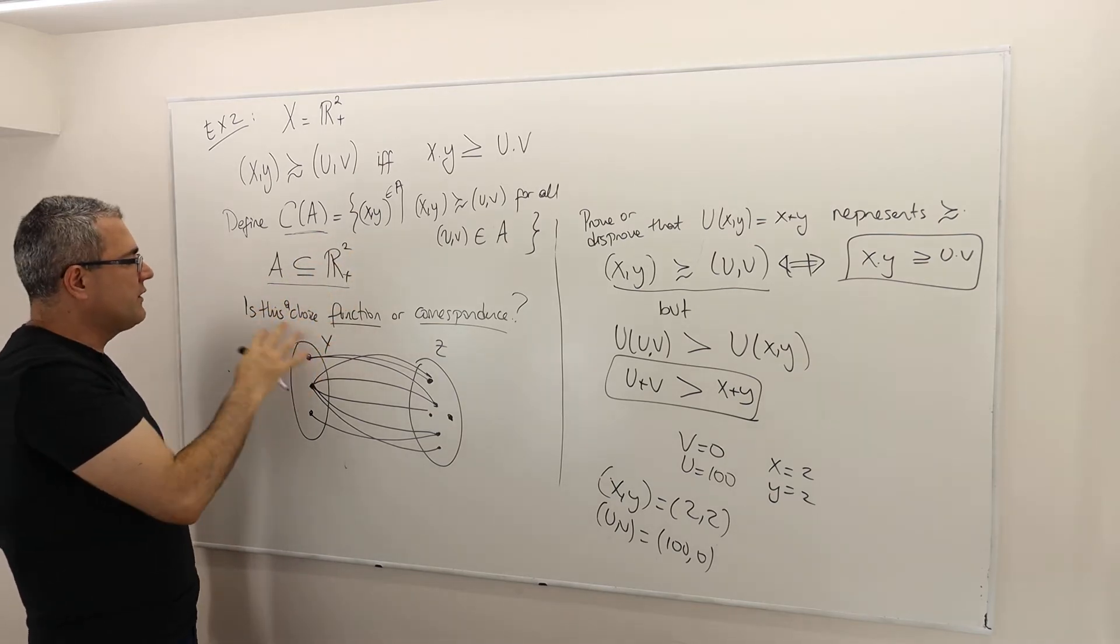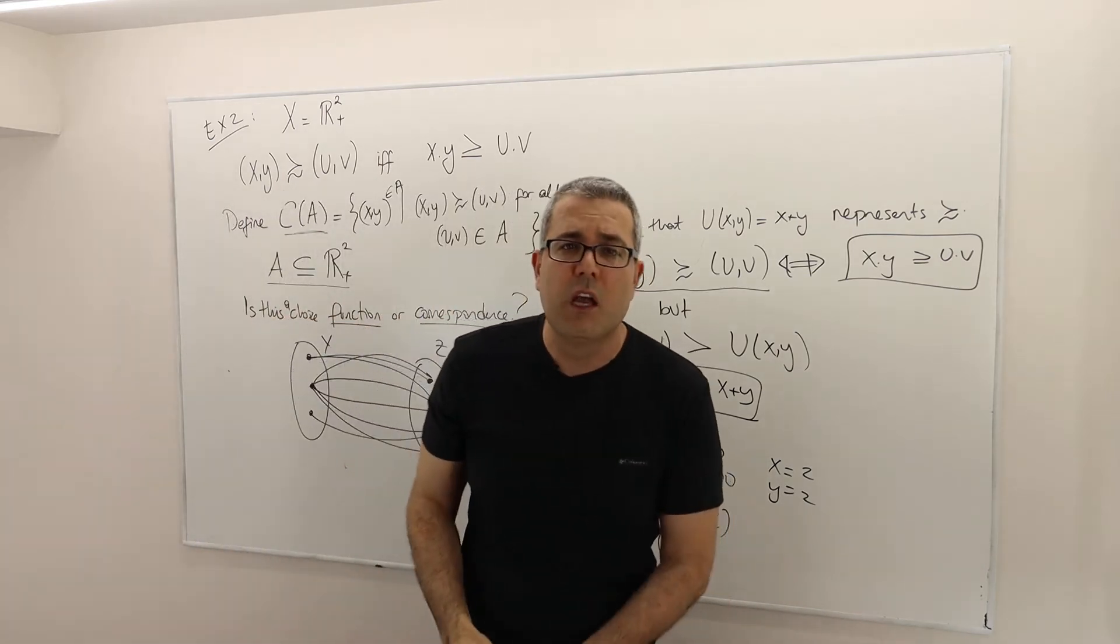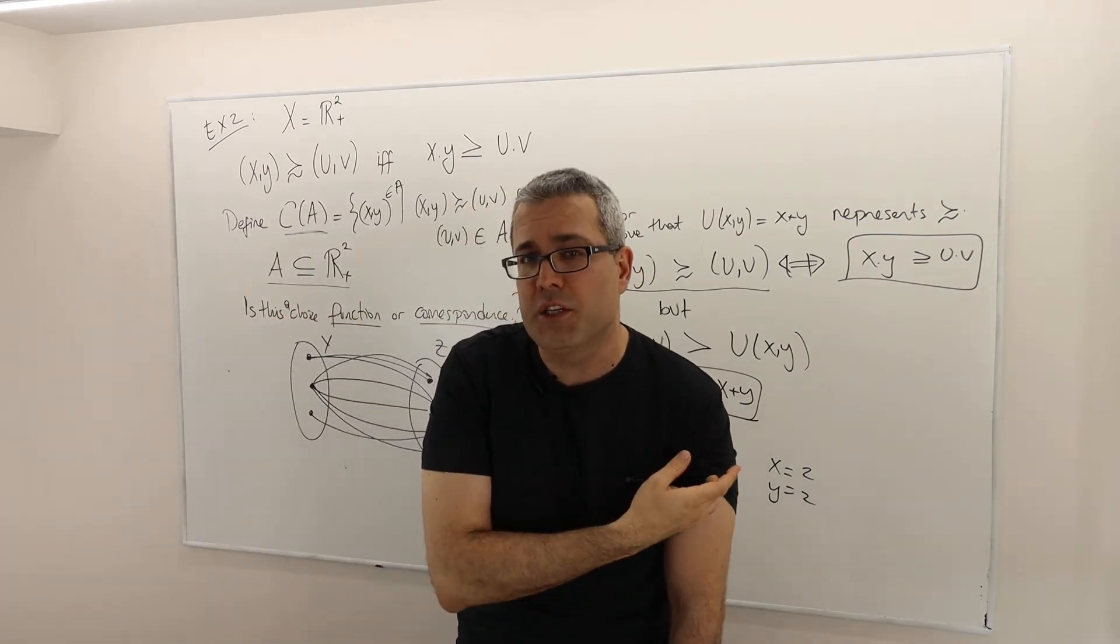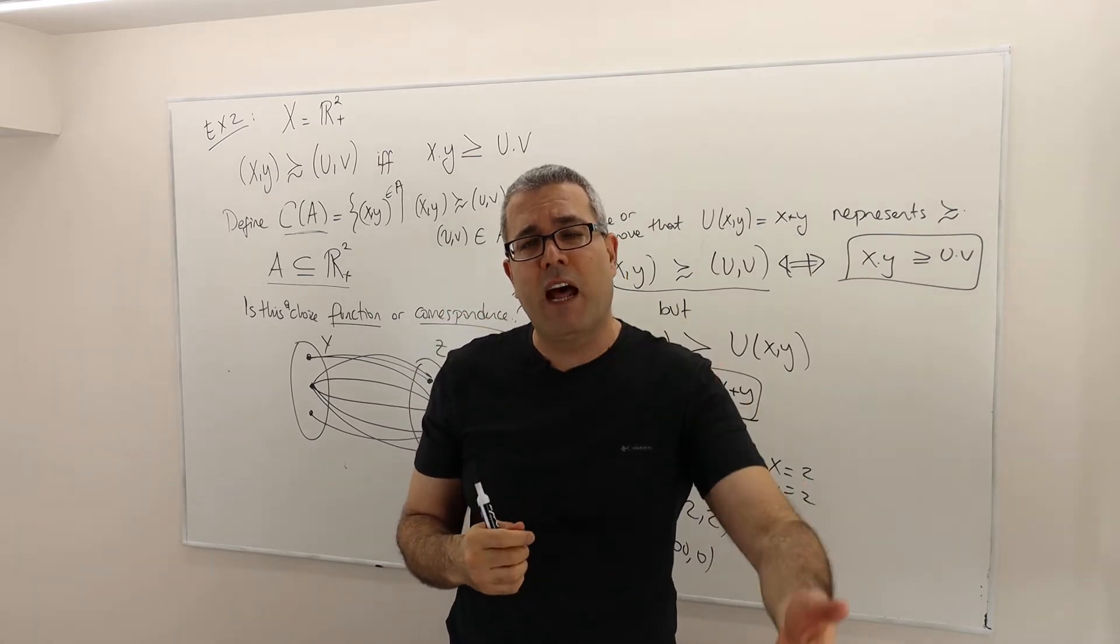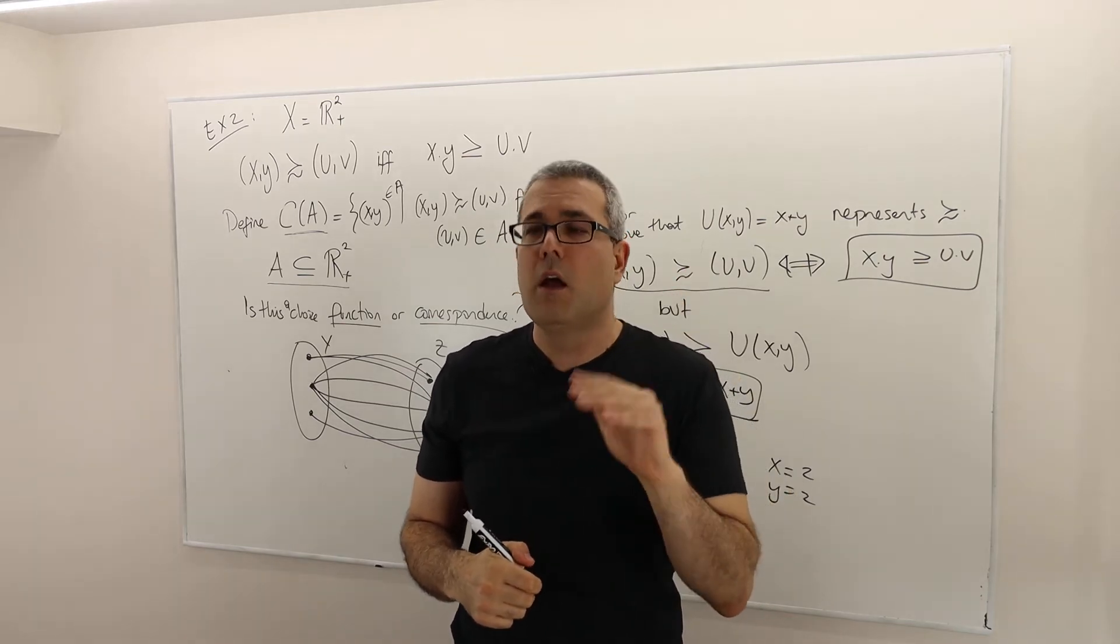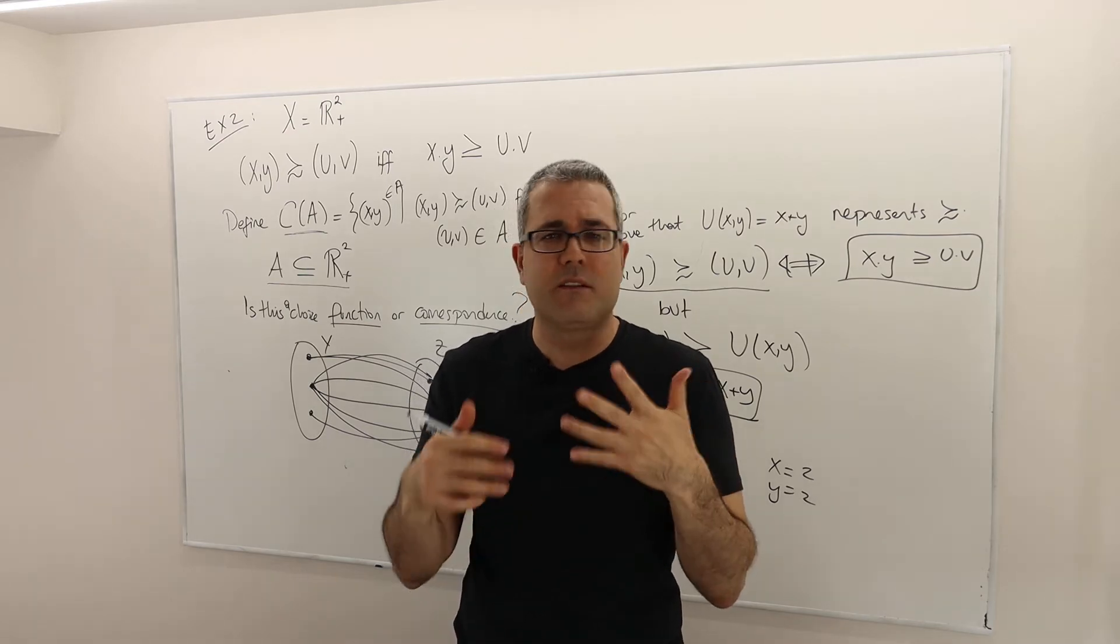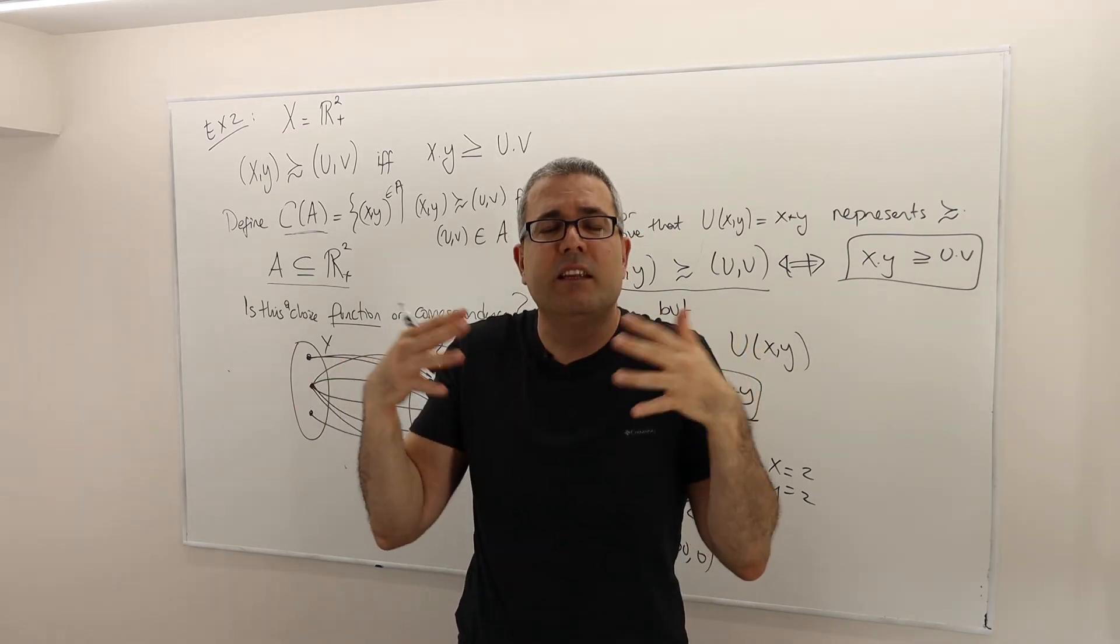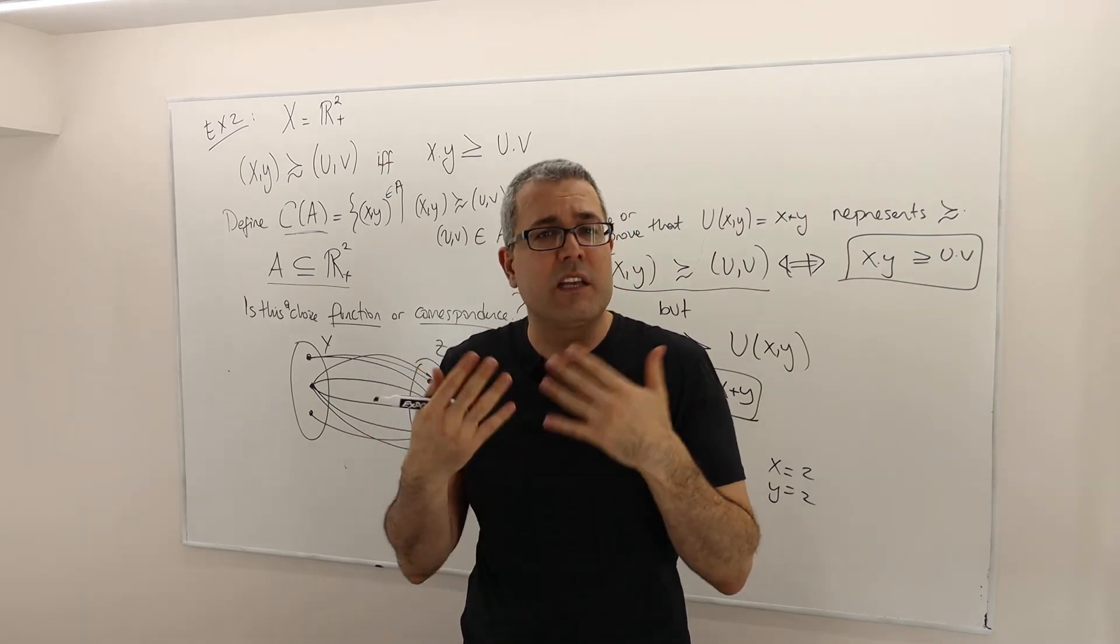So the question is, is this a choice function or choice correspondence? And if you remember the lecture videos, we talk about choice functions, not choice correspondences. So when we define condition alpha, we talk about condition alpha for choice functions. However, I don't know if it is in Ariel's lecture notes, but we can extend the notion of condition alpha for correspondences as well.